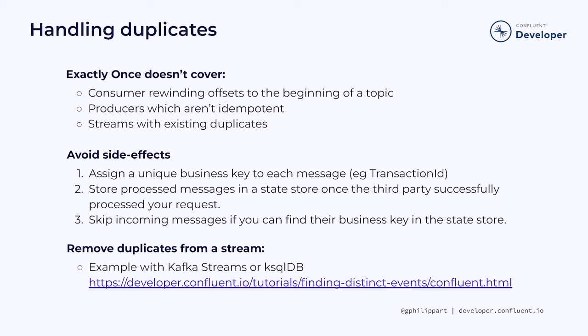Try enabling the Kafka Streams optimization flag, which can improve performance when you're using the DSL. If you aren't already on Confluent Developer, head there now using the link in the video description to access other courses, hands-on exercises, and many other resources.